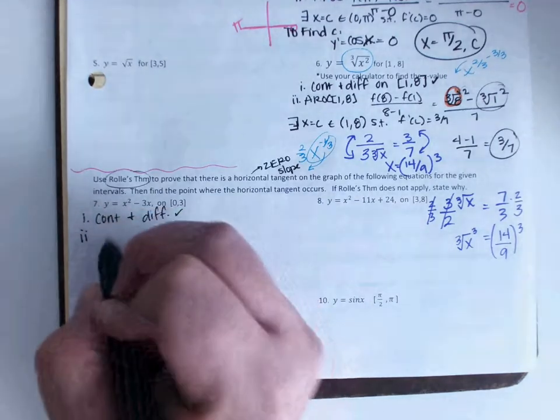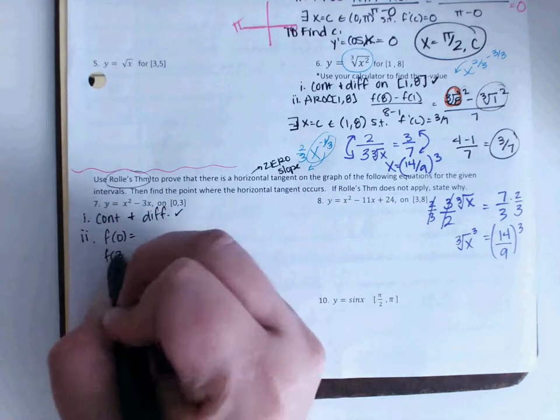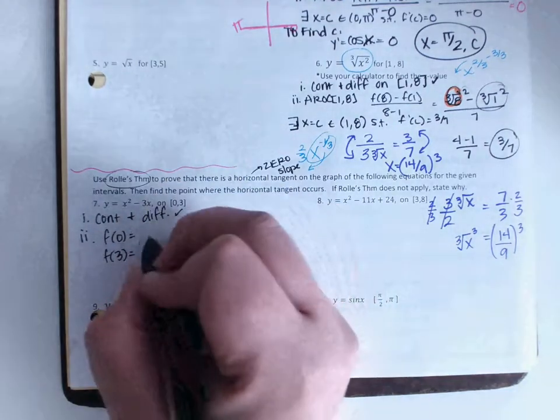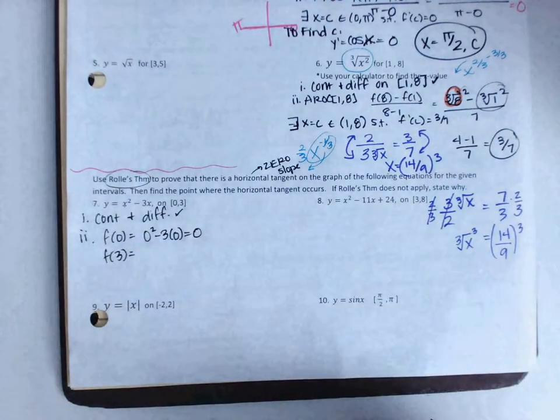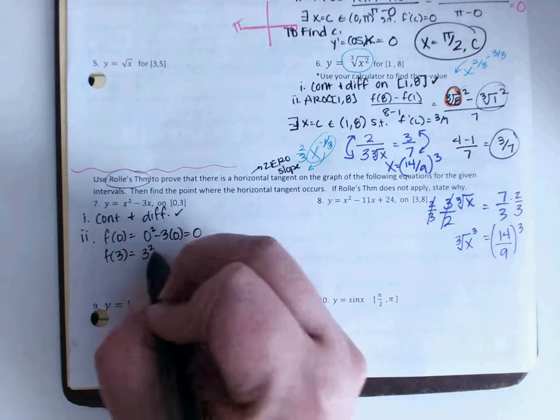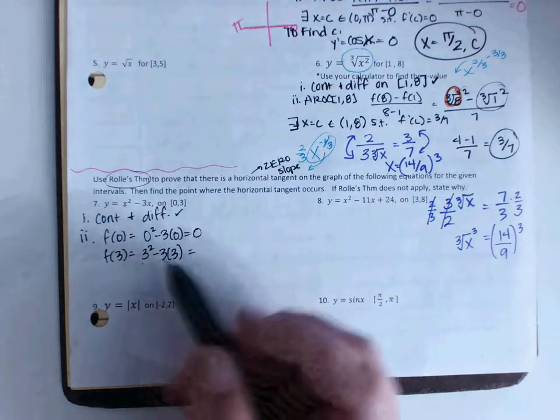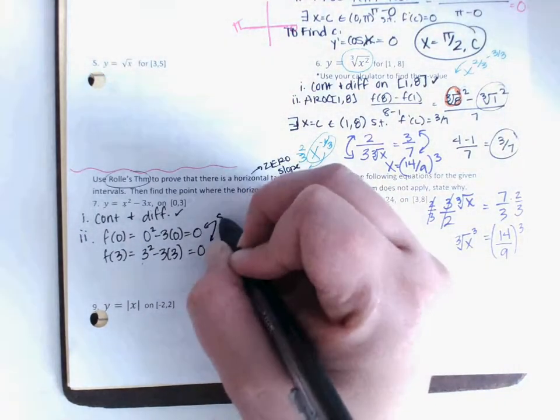Step number 2. I'm going to find the y value at 0 and the y value at 3. f of 0 would be 0 squared minus 3 times 0. That comes out to 0. Next time I'm going to plug in 3. That's 3 squared minus 3 times 3. But that's 9, that's 9. So when I subtract them, I get 0. Now, because those are the same...